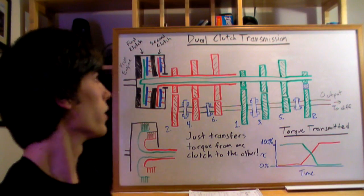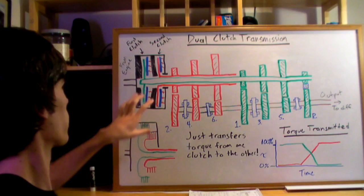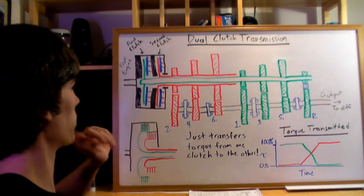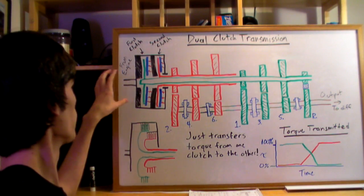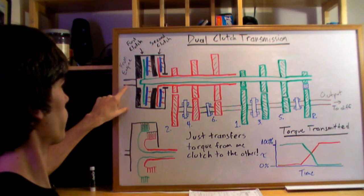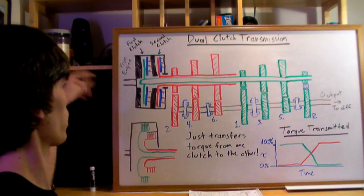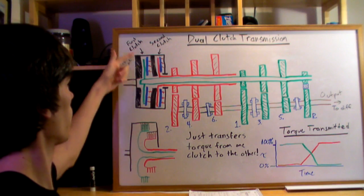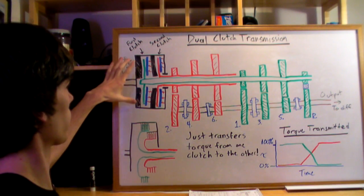Alright, so into dual clutch transmissions. First I'm going to go over all the components and then I'll explain how it works. You're going to have a clutch housing that's going to be rotating from the engine. The engine will have your crankshaft and it'll be connected to this where you'll have this rotating clutch housing.